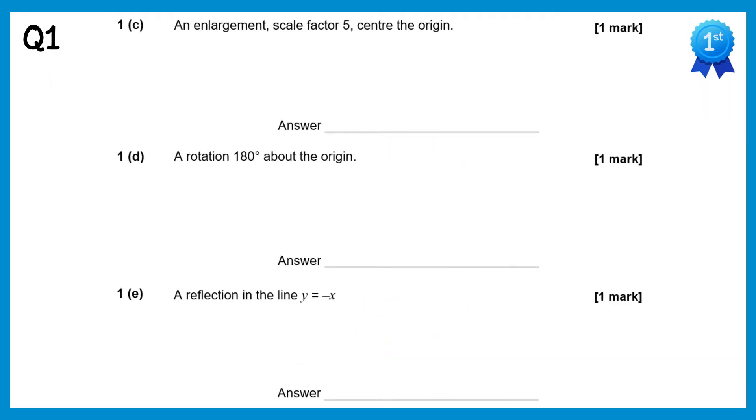For an enlargement scale factor 5 centered at the origin, the point (1,0) would map to (5,0), and (0,1) would map to (0,5). A rotation 180 degrees about the origin: (1,0) maps to (-1,0), and (0,1) maps to (0,-1). And a reflection in the line y equals negative x: (1,0) maps to (0,-1), and (0,1) maps to (-1,0).